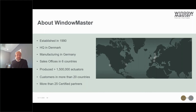Just finishing up then — for those who haven't dealt with WindowMaster before, we've been around for over 30 years in the market with industry-leading actuator technology. Our headquarters is in Denmark with manufacturing in Germany, and we have sales offices in six countries. We've produced over one and a half million actuators and service customers in more than 20 countries through a network of certified partners and key accounts.